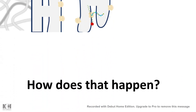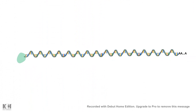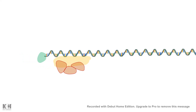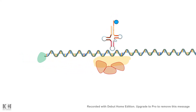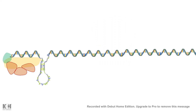UTRs can also regulate translational efficiency. In eukaryotes, the small subunit of the ribosome binds to the 5' cap, along with several initiation factors, and then scans for the start codon. A particular initiator tRNA binds, followed by assembly of the large subunit, and translation initiation takes place. If the 5' UTR has repetitive sequences that form a loop structure, the small subunit and initiation factors have a hard time finding the start codon, slowing the rate of translation.